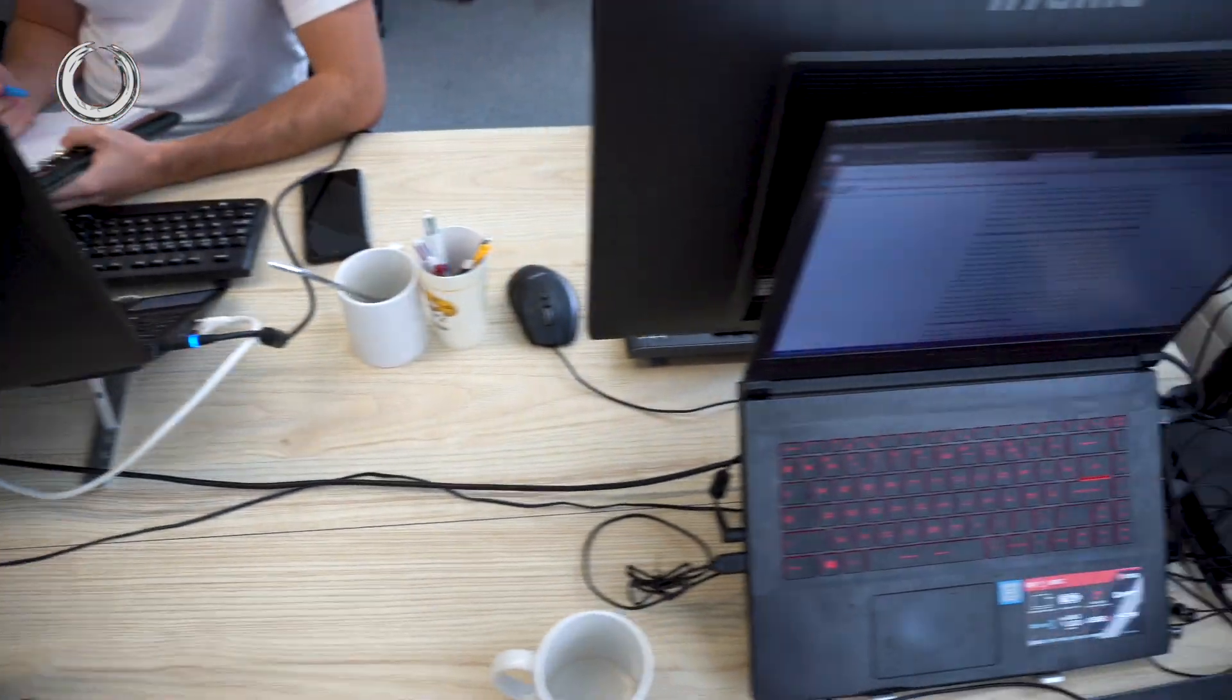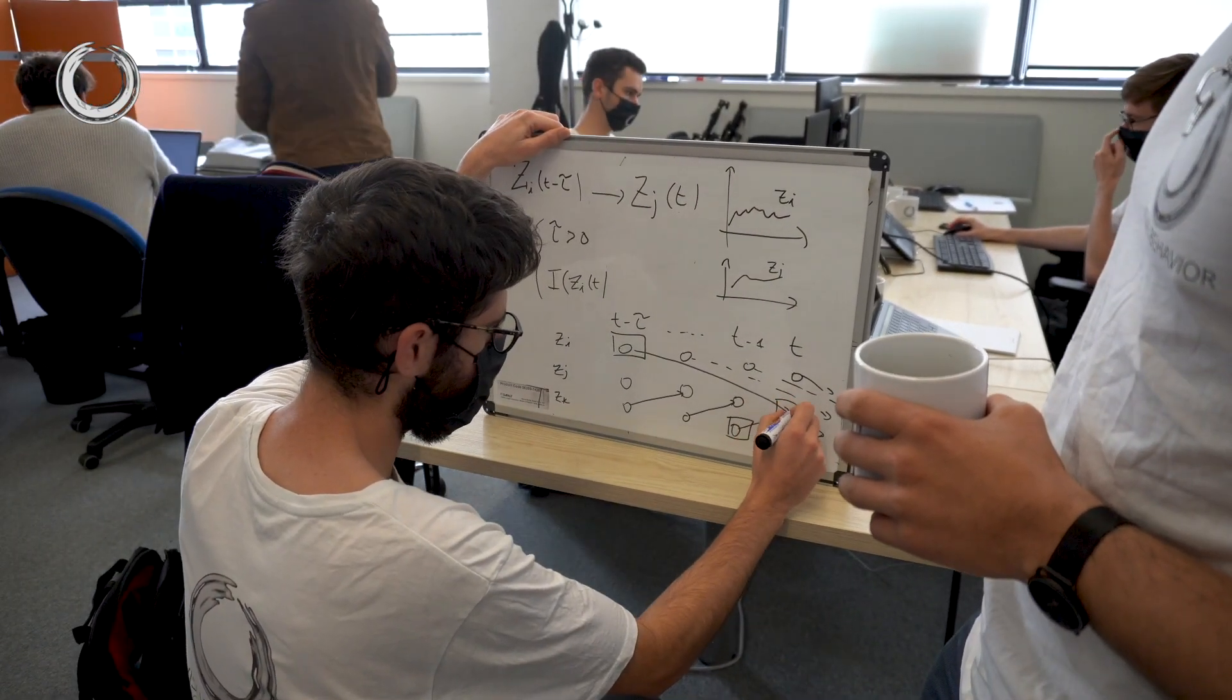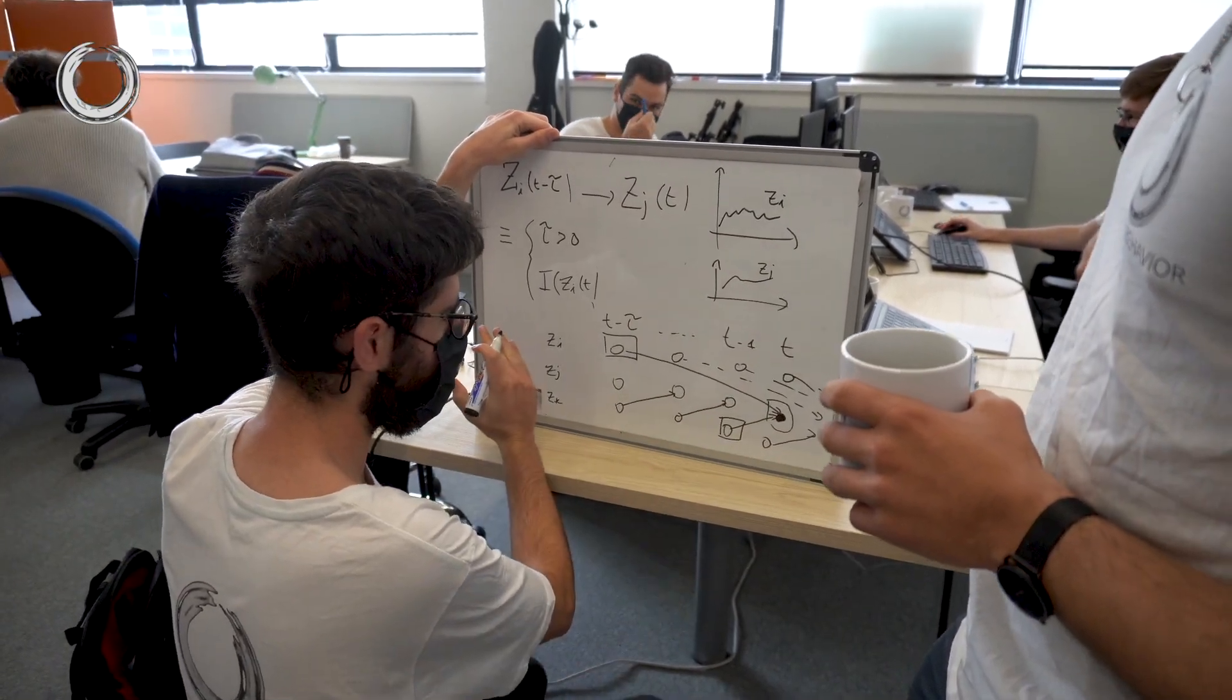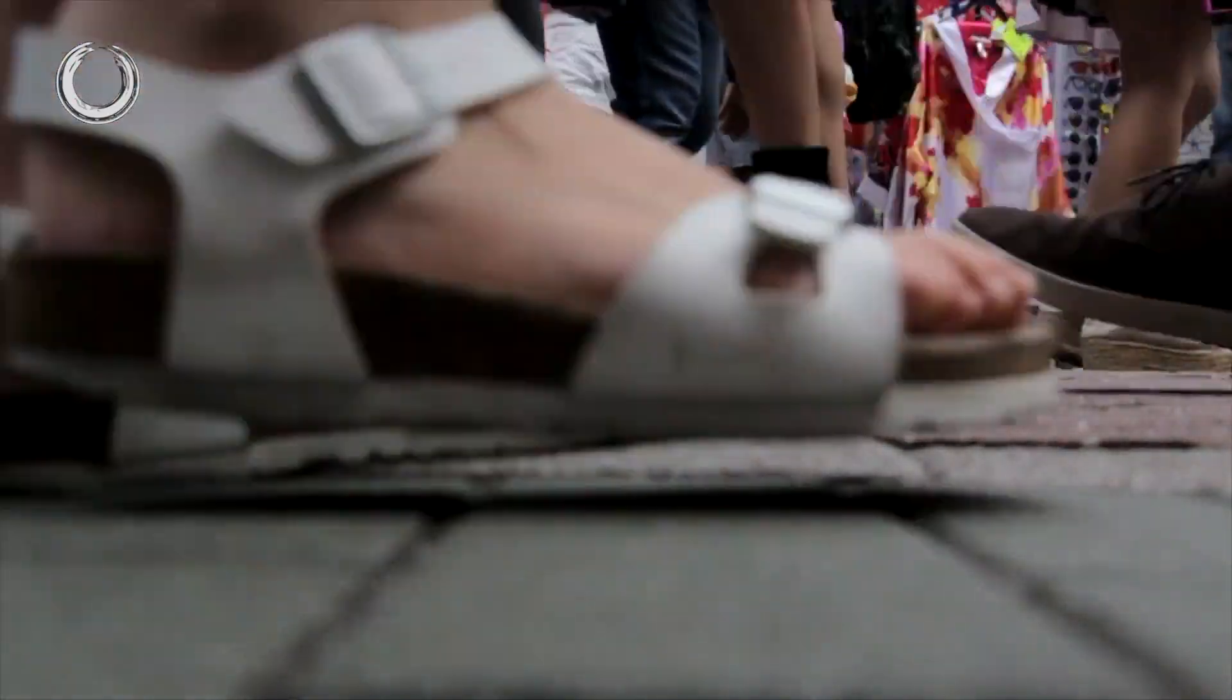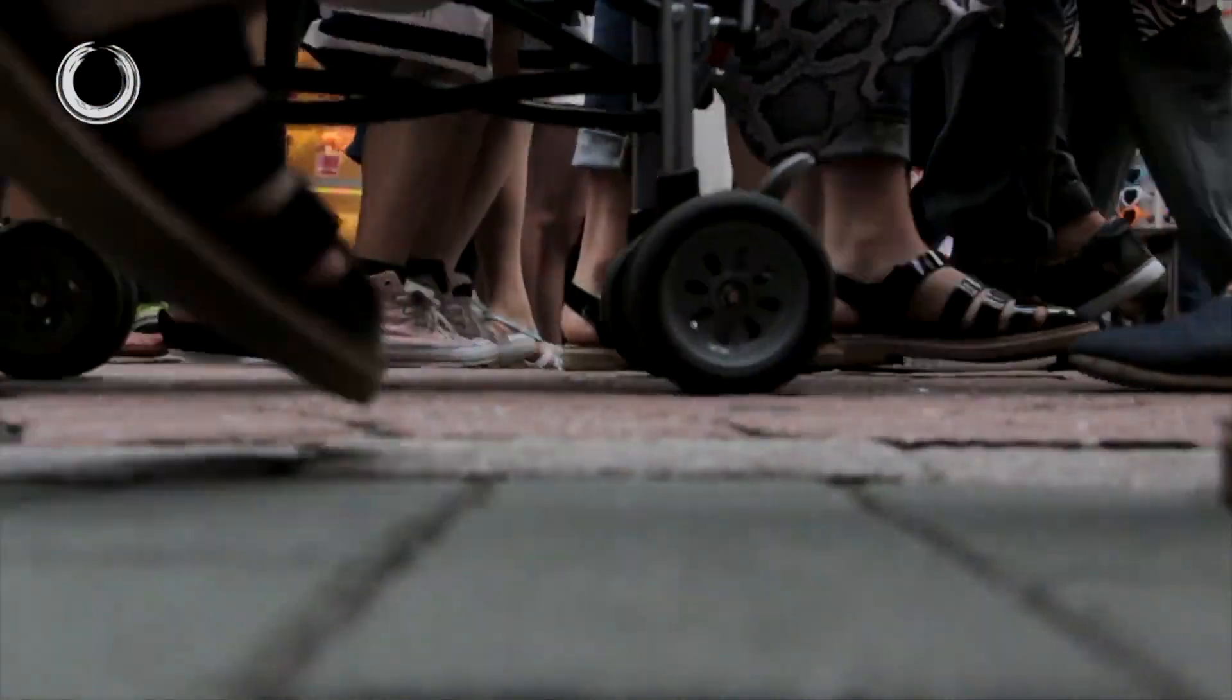That's why we have developed a new low-cost alternative, inspired by the human visual system. This visual system will help robots to understand the world and anticipate events that take place.